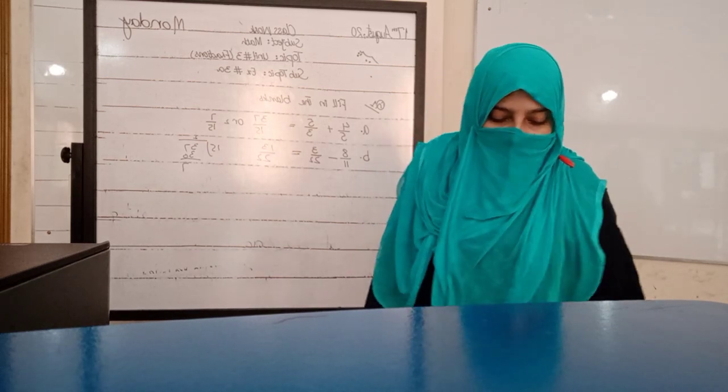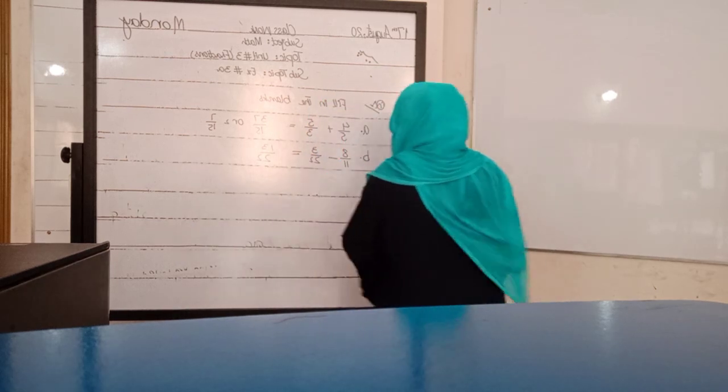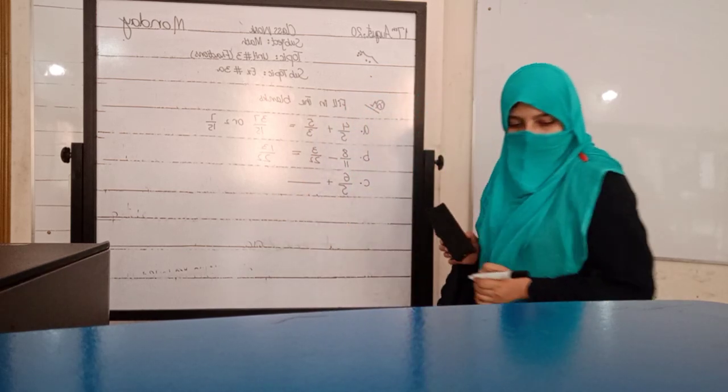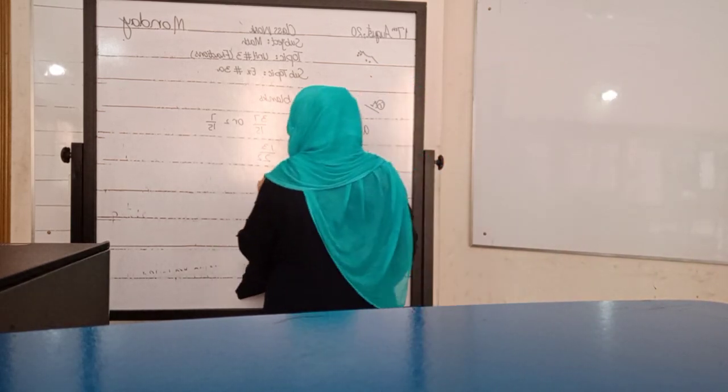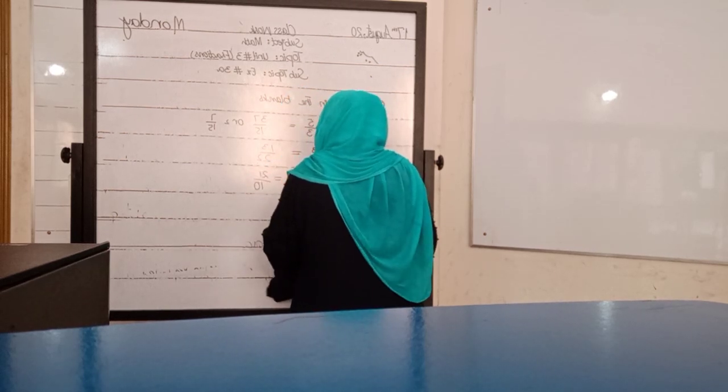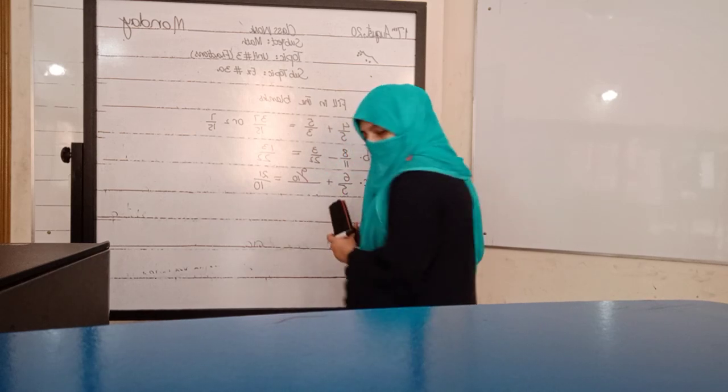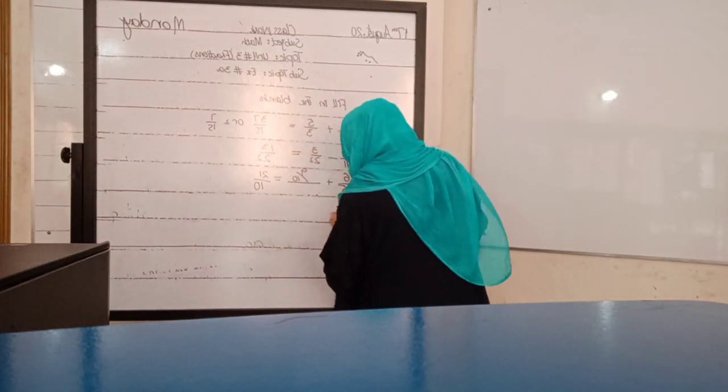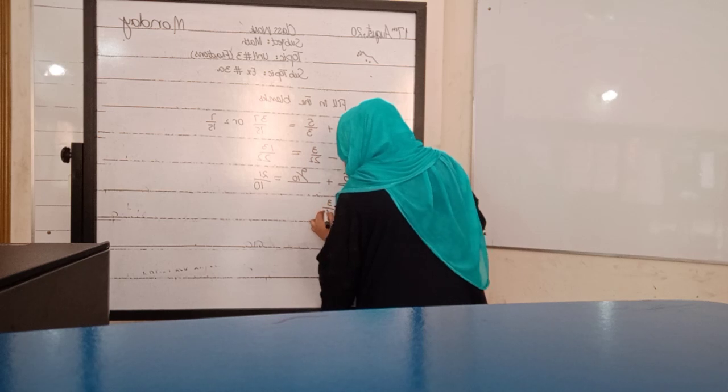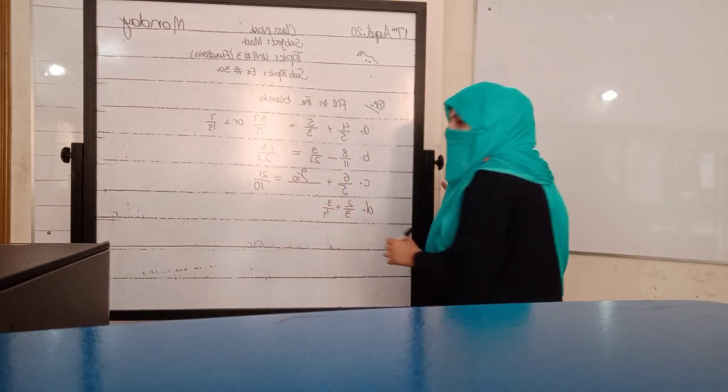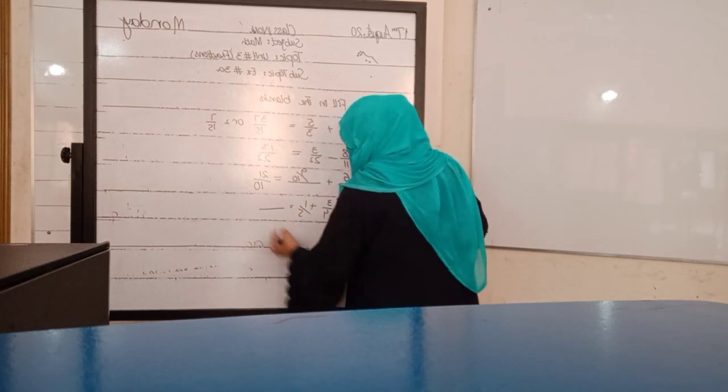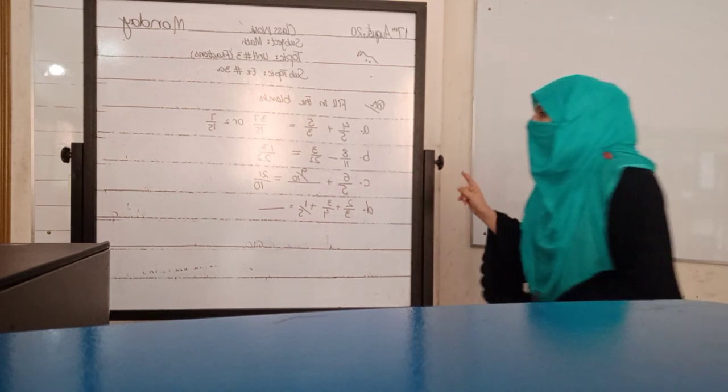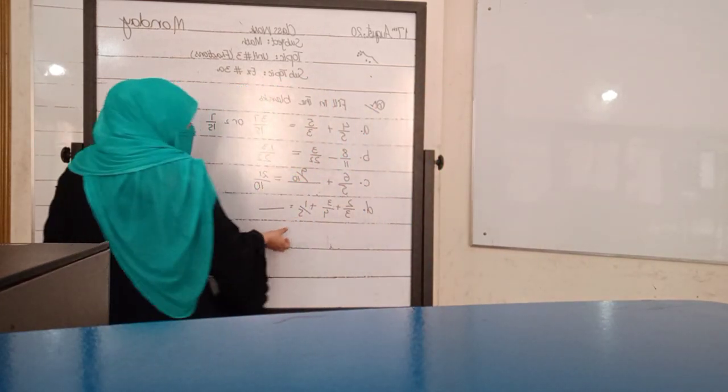Third one is 6 over 5 plus dash equals to 21 over 10. Answer is 9 over 10. D part: 2 by 3 plus 3 by 4 plus 1 by 5 equals.